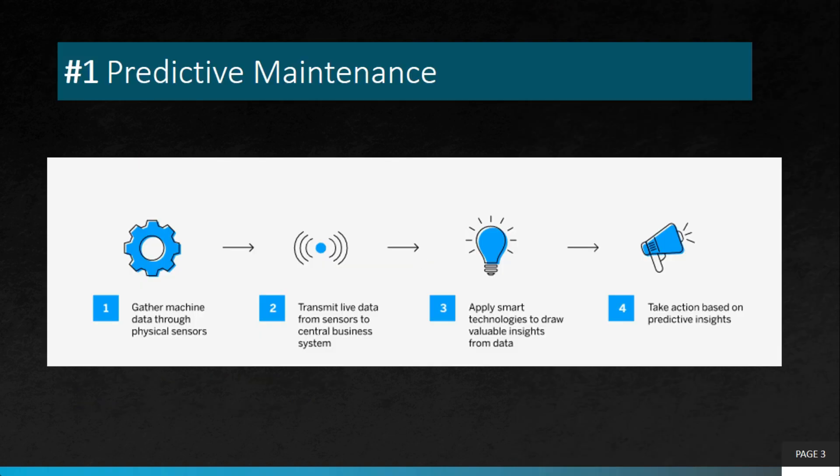The very first project in our list is predictive maintenance. SAP offers a solution called Predictive Maintenance and Service, which uses machine learning algorithms to predict equipment failure and schedule maintenance before it happens. This reduces downtime, maintenance cost, and improves equipment efficiency.